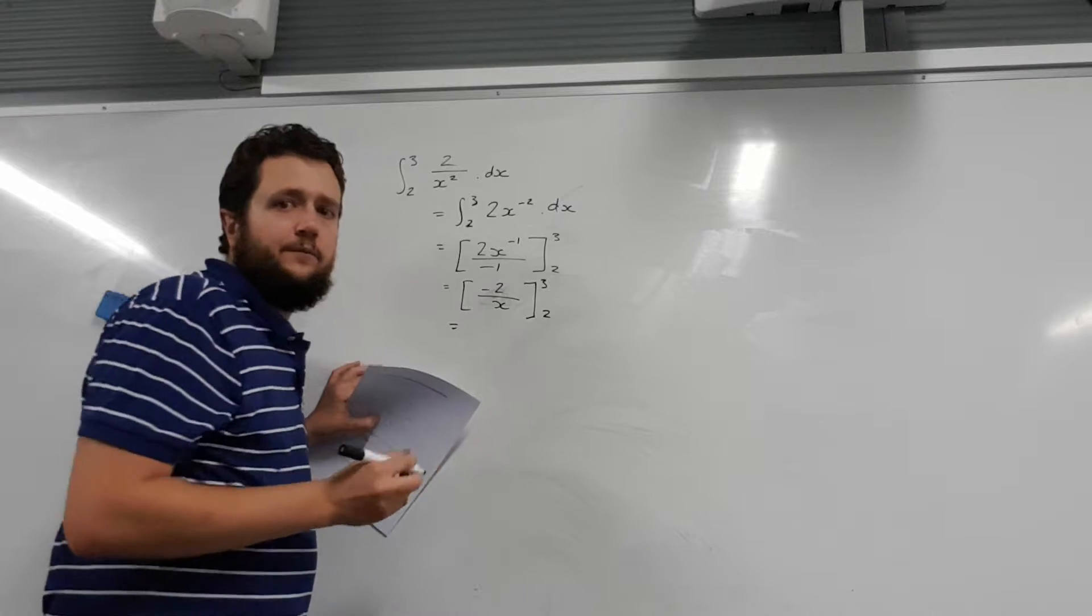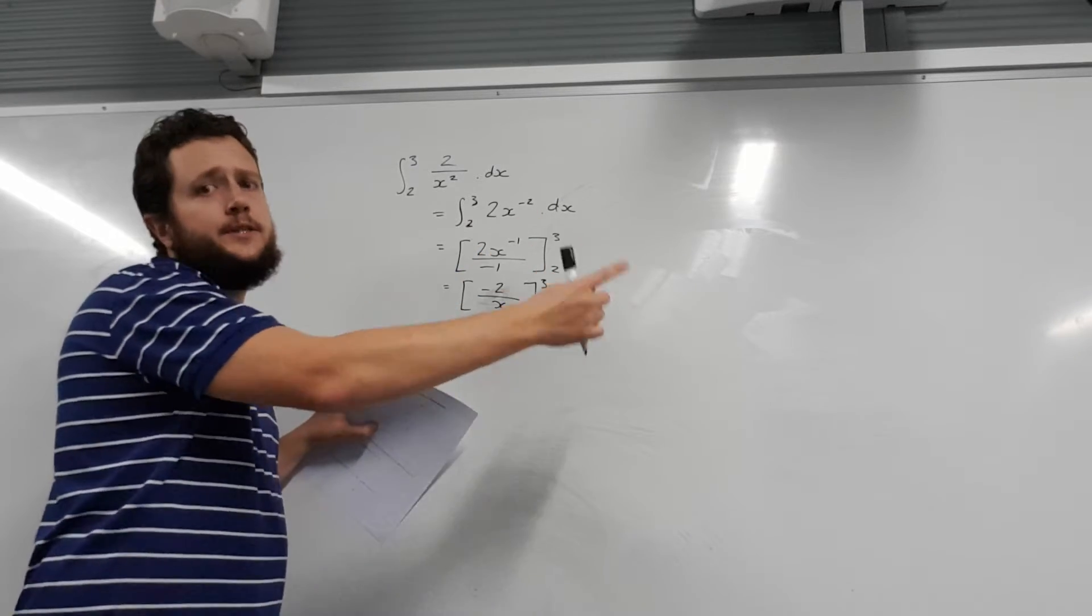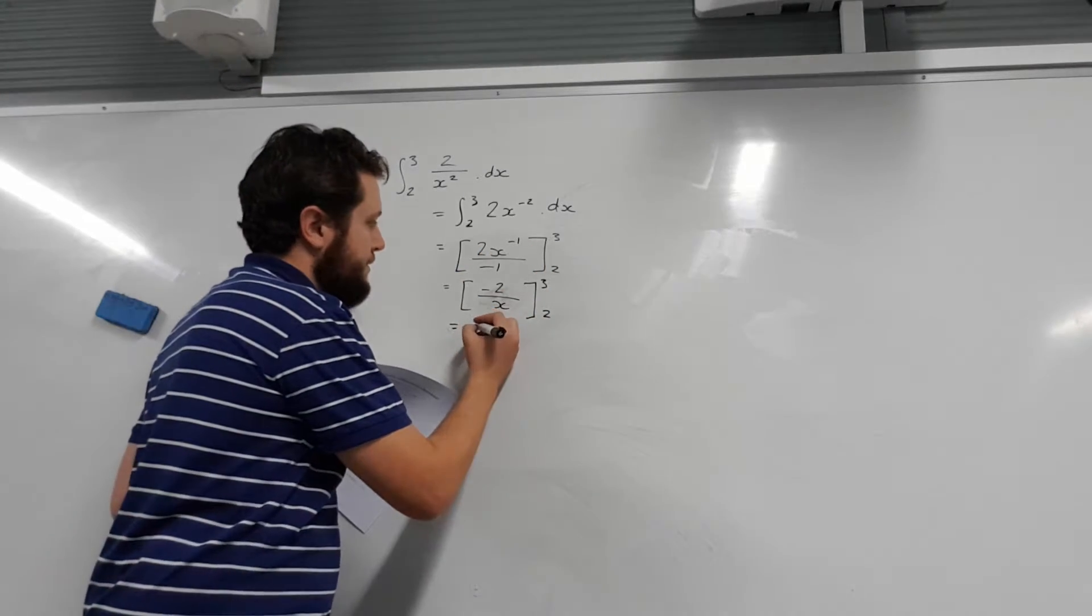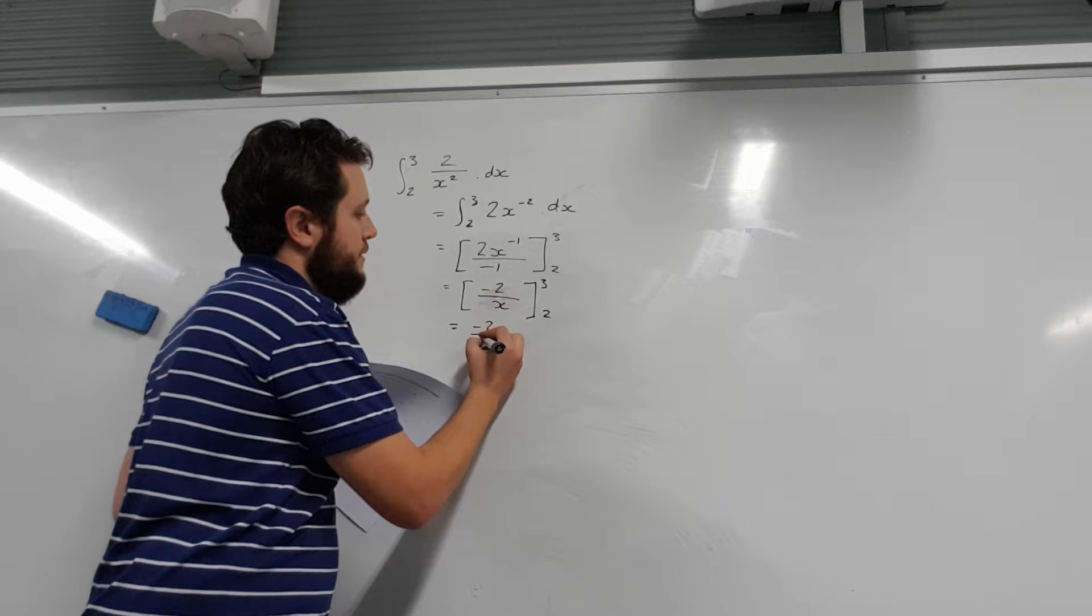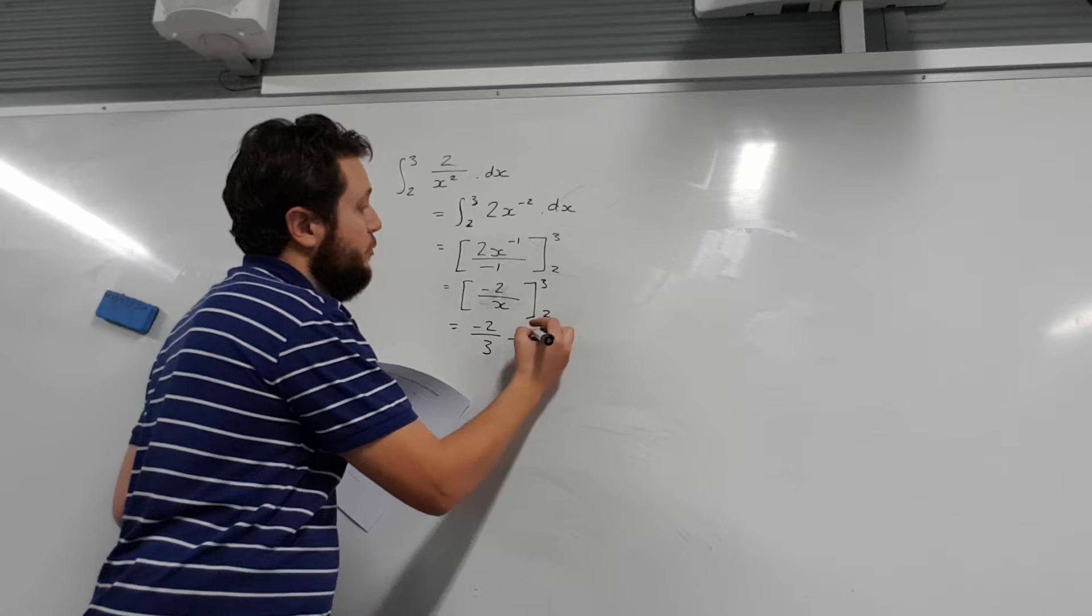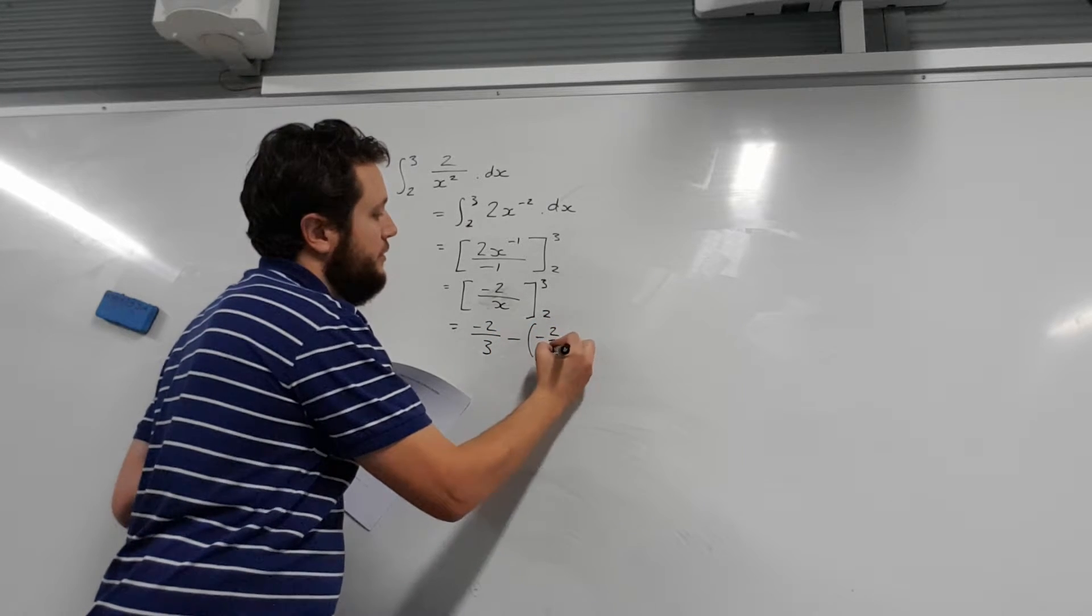Alright, now we can substitute in our values. We substitute in 3 and take away what we get with 2. So it's going to be negative 2 on 3 take away negative 2 on 2.